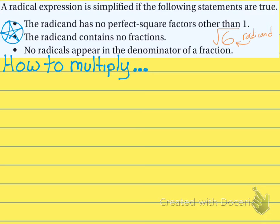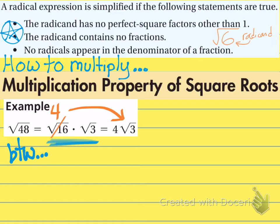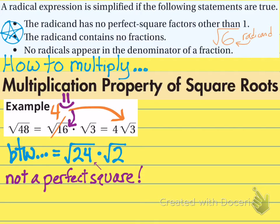Here's how you multiply radicals together. You have a property called the multiplication property of square roots. If you have the square root of 48, you can rewrite it as the square root of 16 times the square root of 3, because 16 times 3 is 48. The square root of 16 would be 4, and you get 4 times the square root of 3. Keep in mind, we did not want to use 24 times 2 to get 48, because 24 and 2 are not perfect squares. Always find the largest perfect square — when you find it, you get the problem done as quickly as possible.